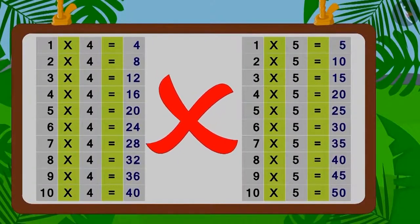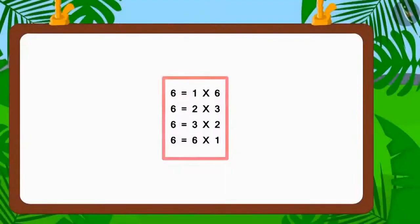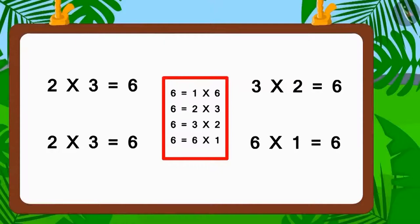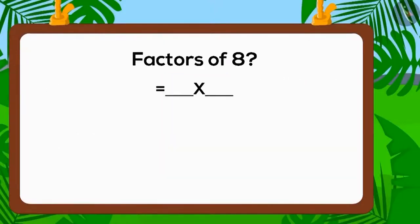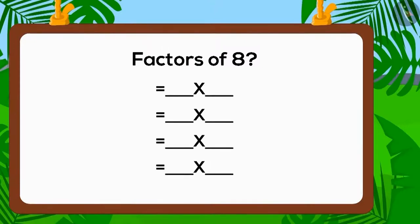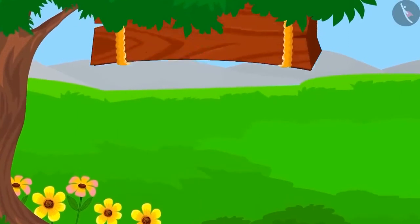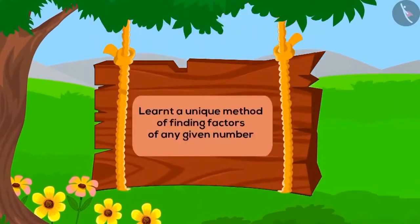Today we saw that one, two, three and six are the factors of the number six, and four and five are not factors of six. By finding all the factors of six we helped the villagers. Children, we can find the factors of any number by using the multiplication table. Now why don't you try finding factors of number eight with your friends? In this lesson we learned a unique method of finding factors of any number.